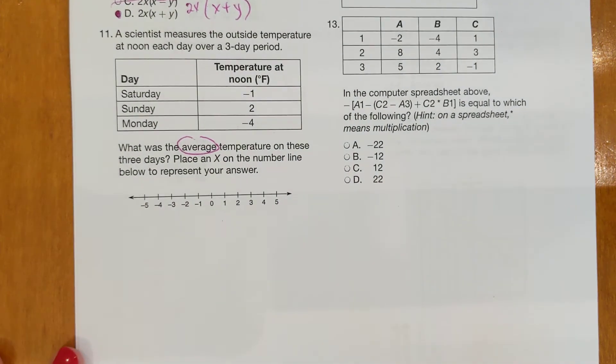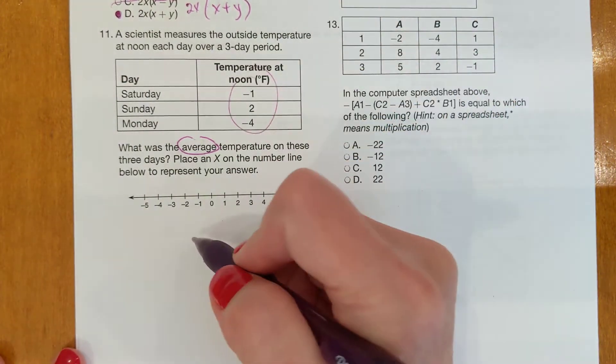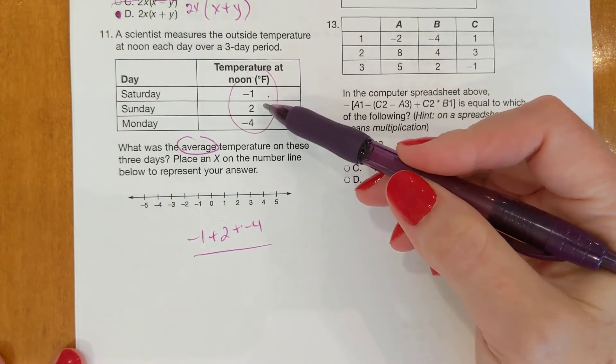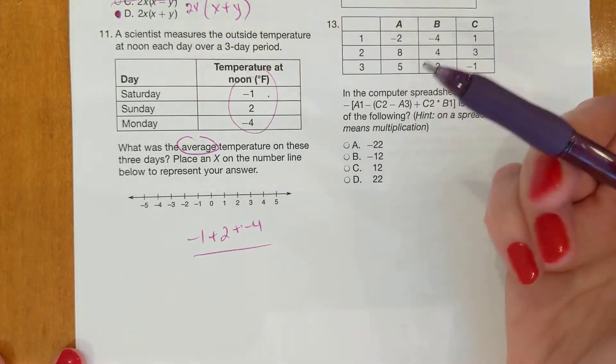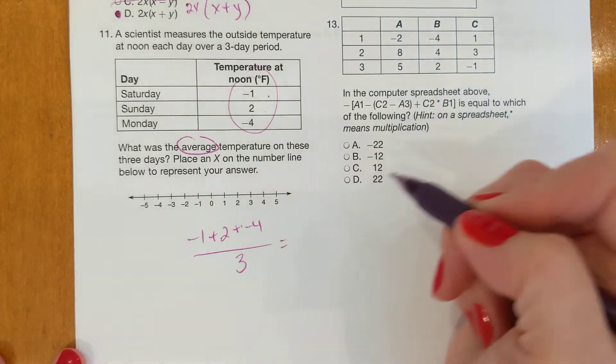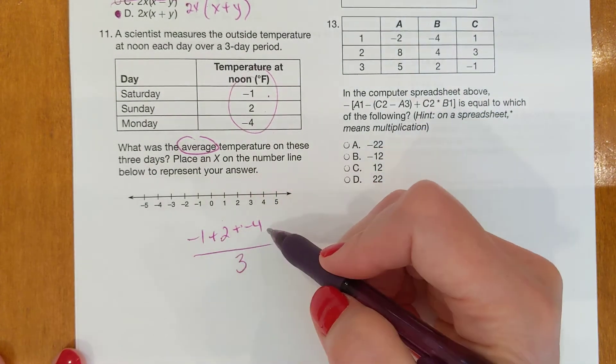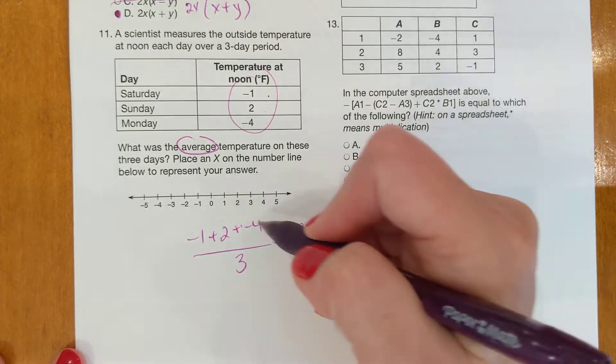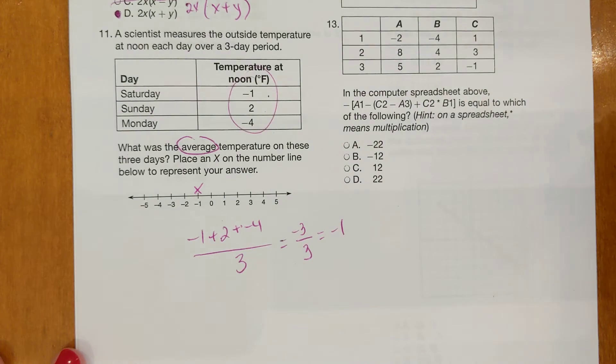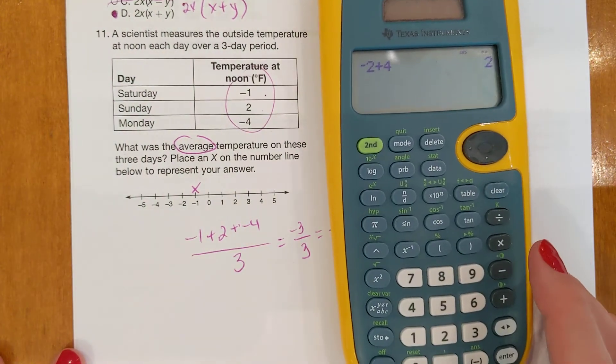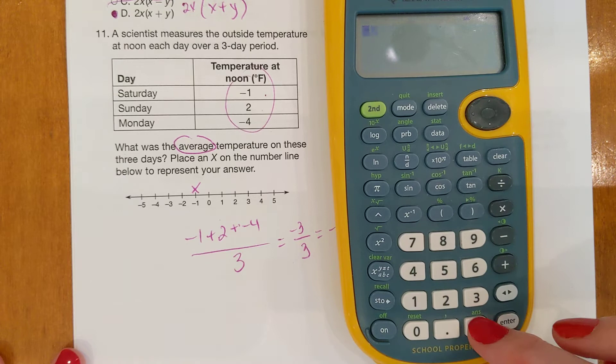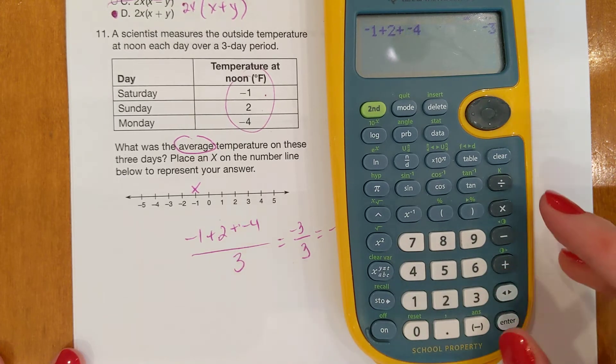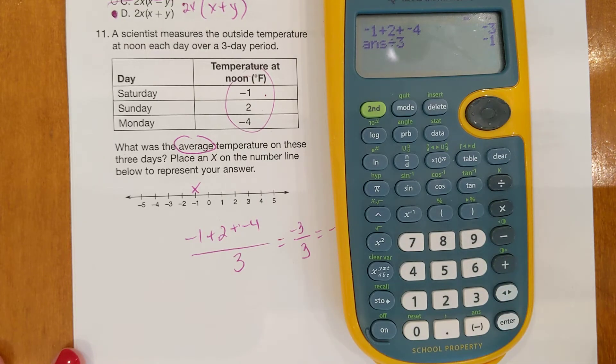What you're supposed to do is add up all the numbers, then divide by 3. So then we put an x on the negative 1. Again, let's not panic. Let's use the calculator. If you didn't know how to do that, it was negative 1 plus 2 plus negative 4, hit enter, then divide by 3, and you get negative 1.